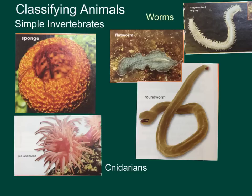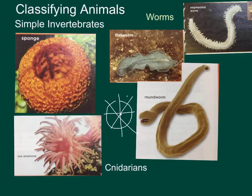Cnidarians are soft-body aquatic creatures, which means they live in water. They're not asymmetrical like the sponge — these guys have radial symmetry. Radial symmetry is a body plan in which all body parts are arranged around a central point, kind of like a circle. If you draw a circle with a dot in the middle and cut it, it's symmetrical any way you cut it. That's radial symmetry.